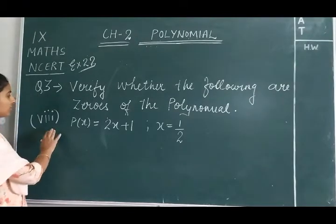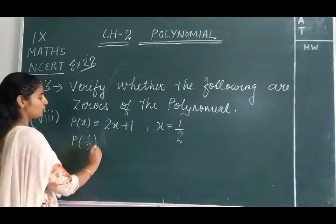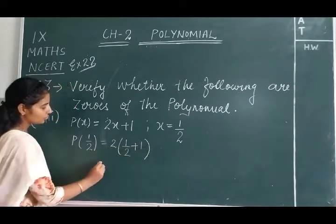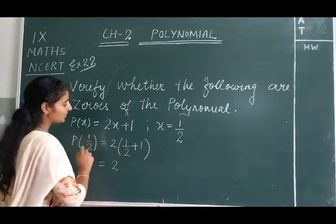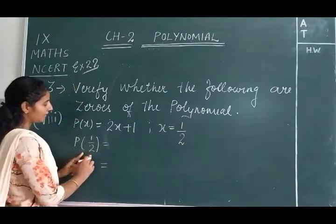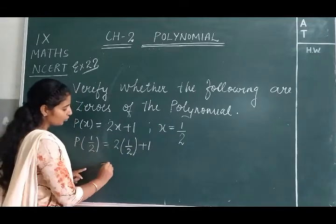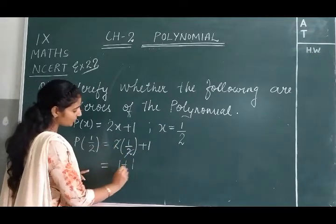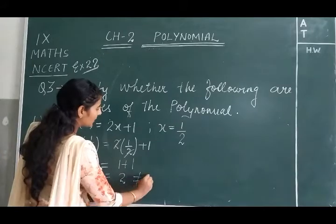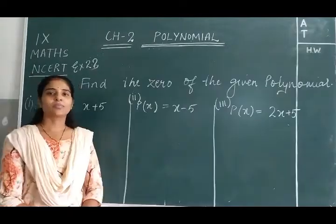For the eighth part, at x = 1/2: p(1/2) = 2. Since this is not equal to 0, x = 1/2 is not a zero of the given polynomial. We have now finished question number 3.